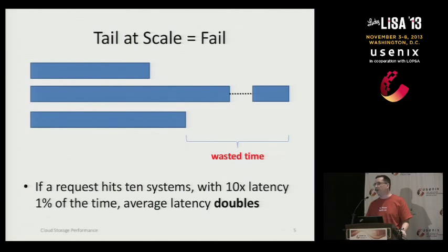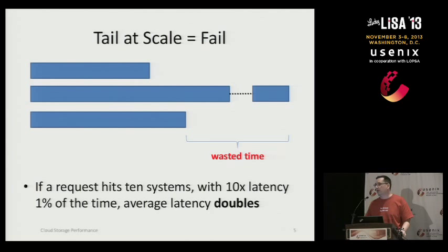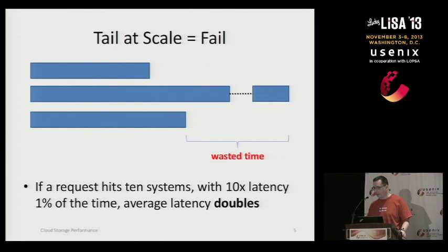They came up with the term 'tail at scale.' The idea is that outliers become more and more significant as the ratio of back-end requests to front-end requests increases. With something like Google search, a single query might be hitting hundreds of servers. If it has to wait for the slowest, something happening only 1% of the time on a single system is affecting your front-end latency practically all the time. This is why in distributed or cloud environments it's even more important to look at the distribution of latency, not just an average.